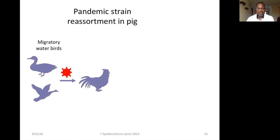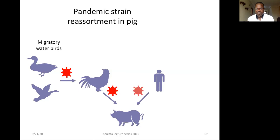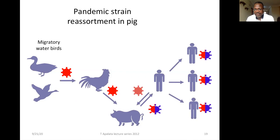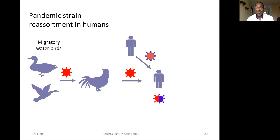The pathway goes from migratory waterfowl to domesticated birds, and sometimes to pigs. In the epithelium of the pig, which is not very different from human epithelium, the two viruses mix and undergo gene reassortment to form a new virus. This new virus is then able to be transmitted from human to human, causing a pandemic. The pandemic strain reassortment can also occur directly from migratory bird to domestic bird to human, resulting in human-to-human transmission.